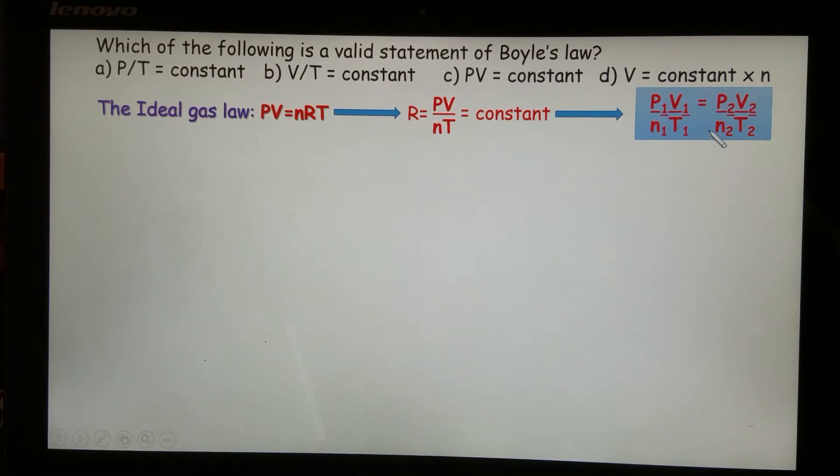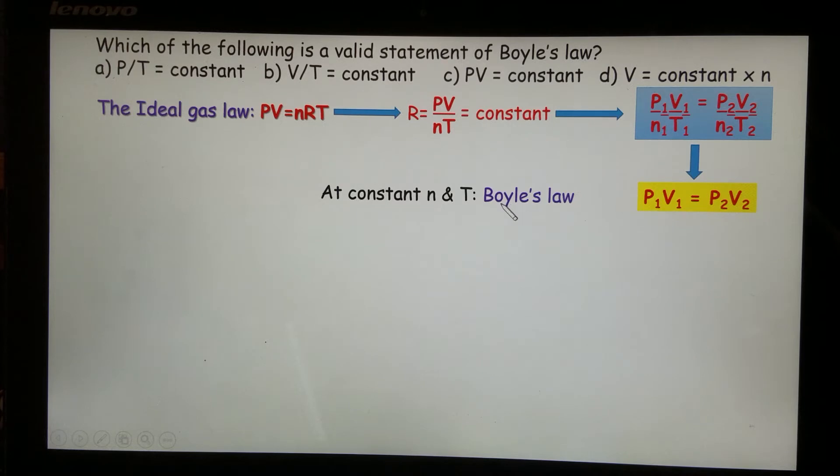Then from this equation right here, we can write many other related gas equations. For example, if the number of moles and the temperature is constant, n1 equals n2, T1 equals T2, then we can simply cross out n1T1 and n2T2. Then what do we have? We just have P1V1 equals P2V2 left. And that's Boyle's law.